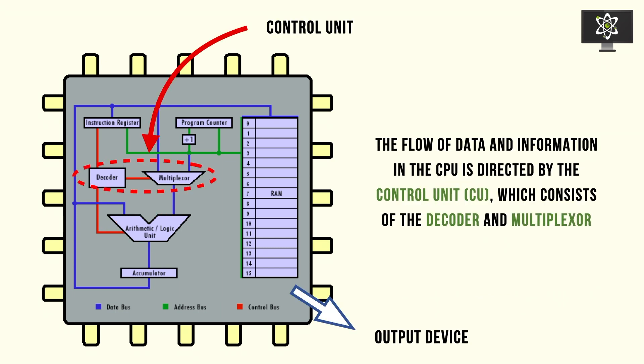There are two components that are critical for the data flow inside the CPU. These two components make up the control unit: the decoder and the multiplexer. They link up the key channels within the CPU and dictate the flow of data within the CPU.